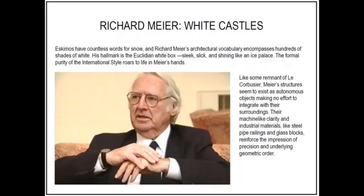As Richard Meier explained, it is against a white surface that one best appreciates the play of light and shadow, solids and voids. Like Le Corbusier's works, Richard Meier's structures also seem to be autonomous — they made no effort to merge with the surroundings or the context. Their machine-like clarity and industrial materials like steel, pipe railings, and glass blocks reinforce the impression of precision and underlying geometric order.